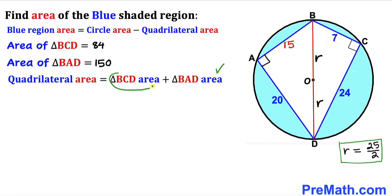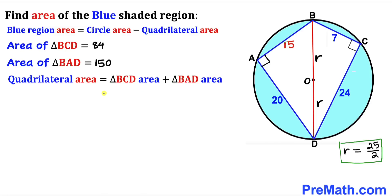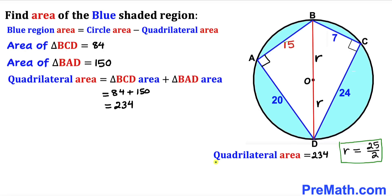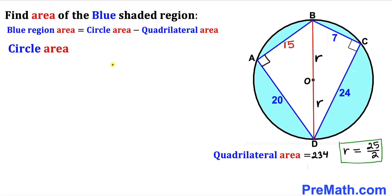Filling in the equation: area of quadrilateral ABCD = 84 + 150 = 234 square units.